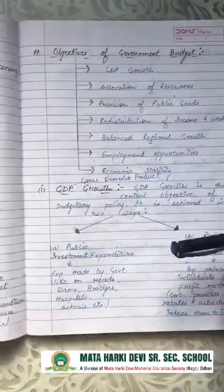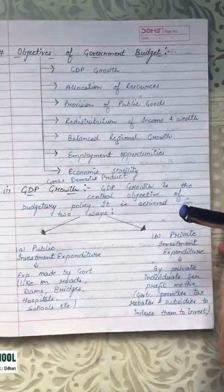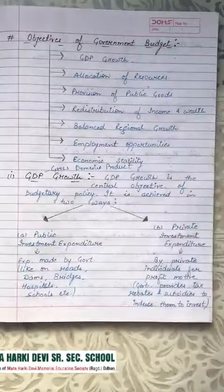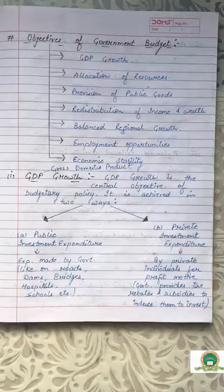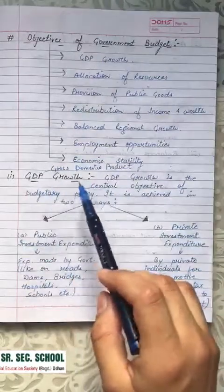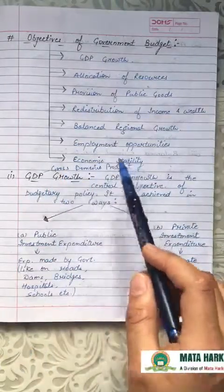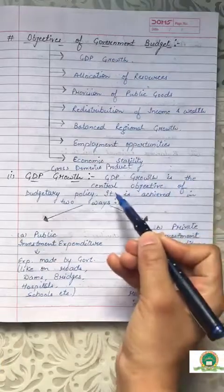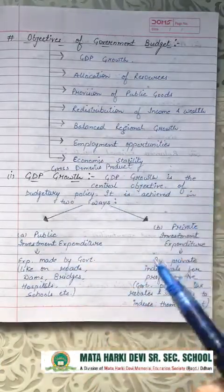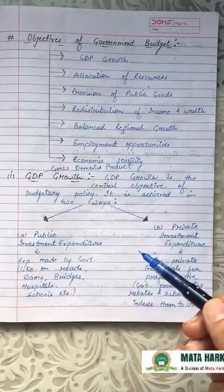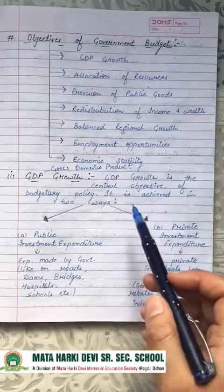Next topic is the objectives of government budget — the most important topic of this chapter, because almost every year in board exams some point from this topic is asked with explanation. The first objective is GDP growth. GDP stands for Gross Domestic Product — the total production of all goods and services in an economy. GDP growth is the central objective of budgetary policy.